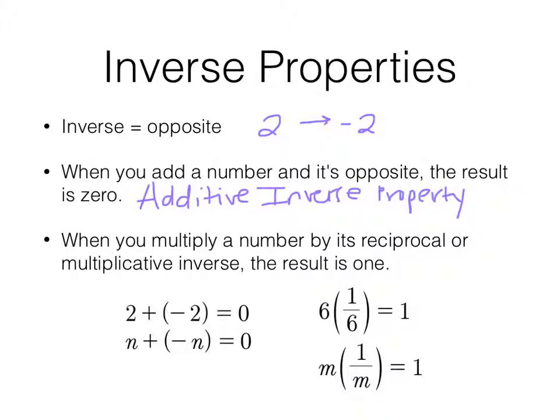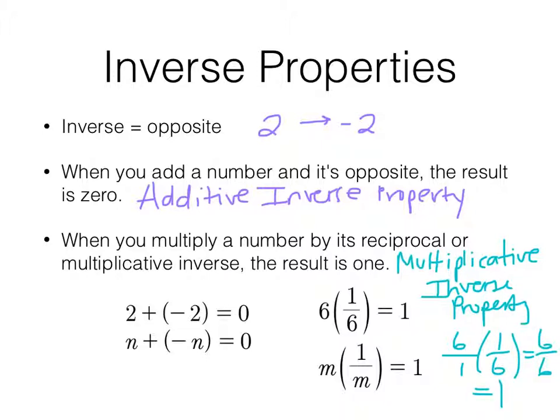How about this one? When you multiply a number by its reciprocal or multiplicative inverse, the result is 1. And that's what you see down here at the bottom. So a number plus its opposite is 0. That's our additive inverse property. And then the other one is our multiplicative inverse property. And that's this one. Any number times its reciprocal is equal to 1. Think about the actual multiplication there. We'd make it 6 over 1 times 1 over 6. If we just multiply, we get 6 over 6. That's 1.